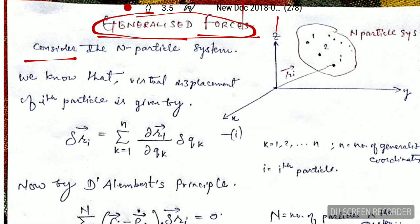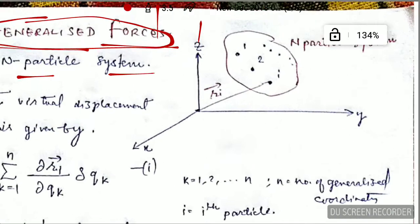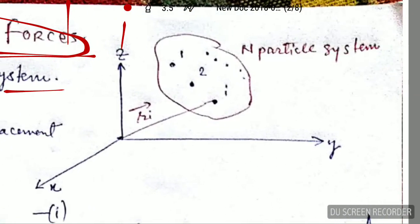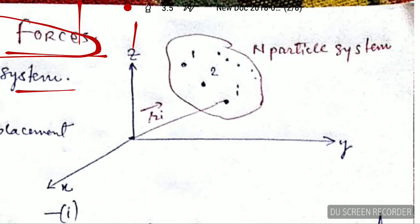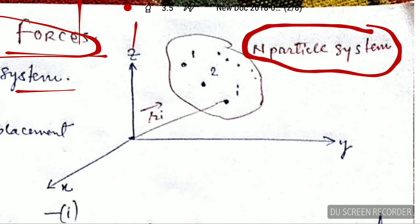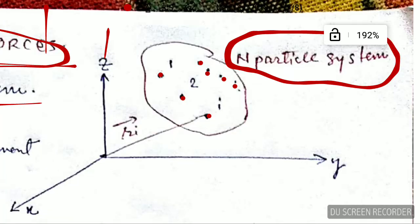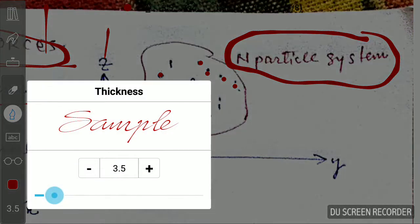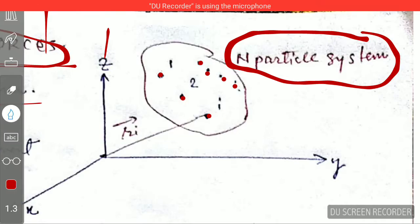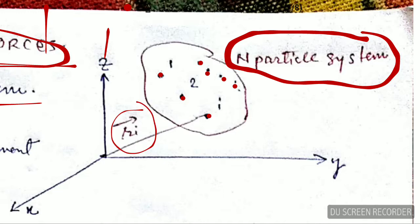Consider an n-particle system. Here I have drawn the n-particle system in three-dimensional space. The number of particles in the n-particle system is n. You can see the particles — the first particle, second particle, ith particle — and in this way there are n particles. This is the position vector of the ith particle in the system.